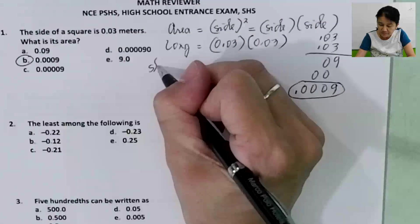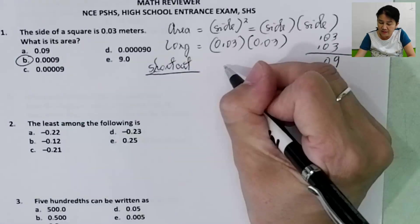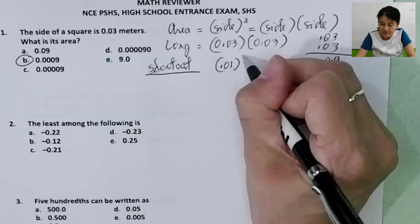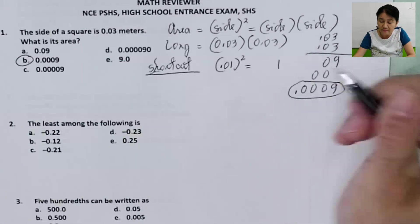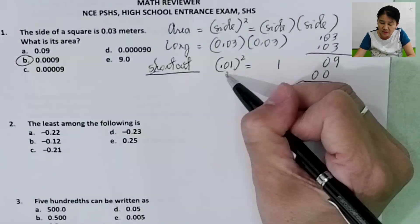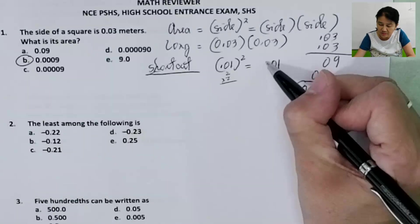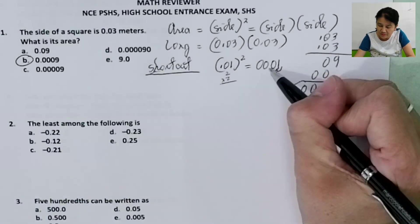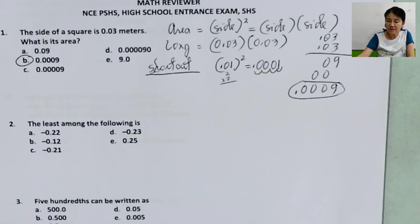Shortcut: when you're squaring a decimal, like 0.01, multiply 1 two times — 1 times 1 is 1. Then count the number of decimal places: there are 2 decimal places, times 2, so there should be 4. Count 1, 2, 3, 4. So your answer is 0.0001.